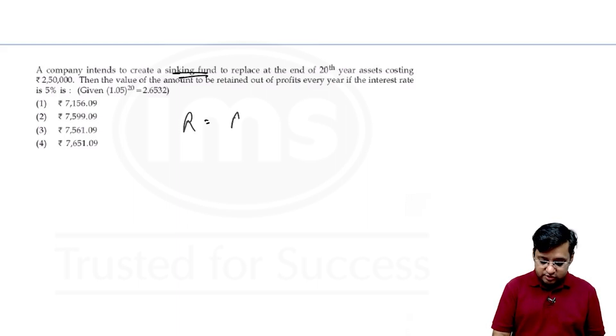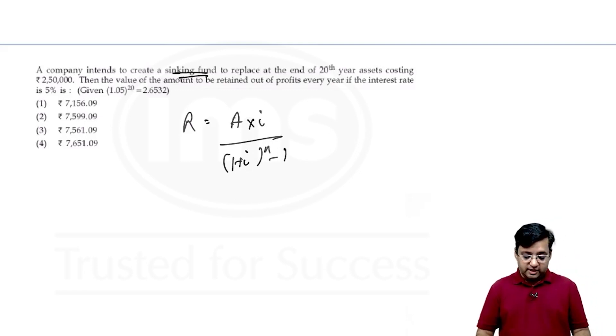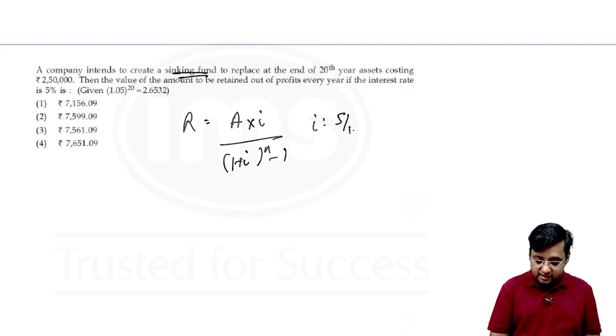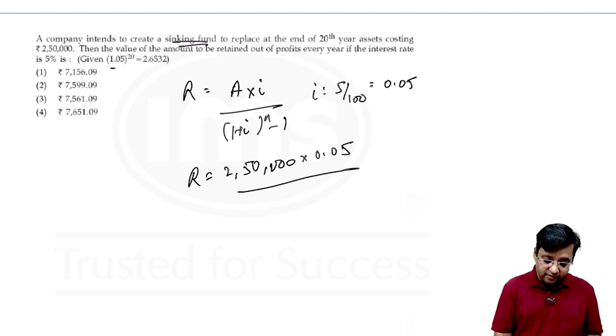We will make a separate video for financial mathematics. For now what is the formula for a sinking fund? It is r equals to a into i by (1 plus i) to the power n minus 1. Now here a is the amount, i is the interest portion. So if I take i this will be 5% that is 5 by 100 that will become 0.05.